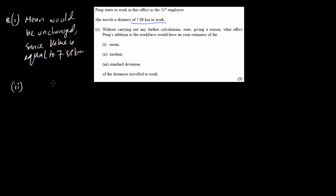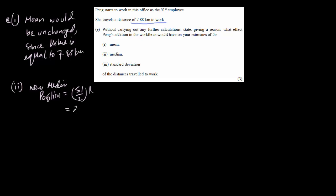For the median: previously there were 50 data values, so the median position used the 25th and 26th values. With 51 data values, the new median position is 51 ÷ 2 = 25.5, which is the 26th position. Therefore the median would be changed.